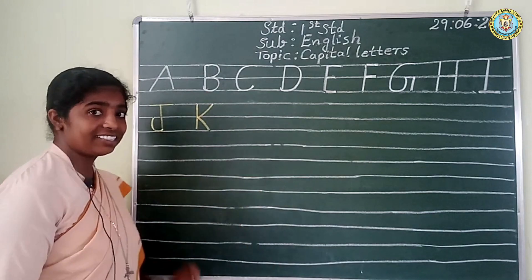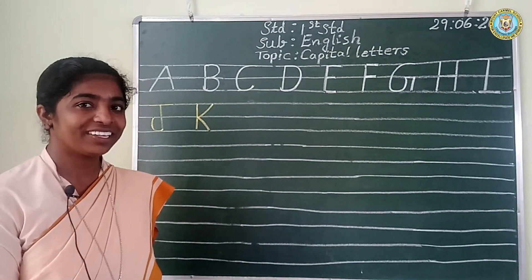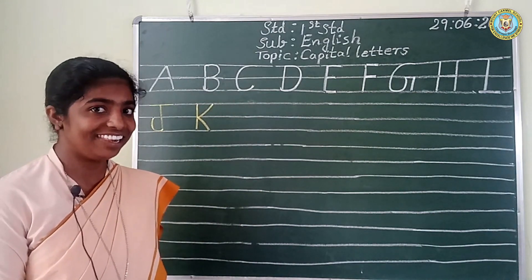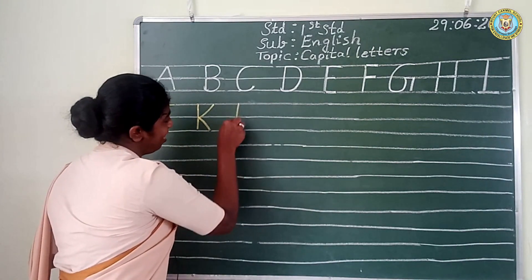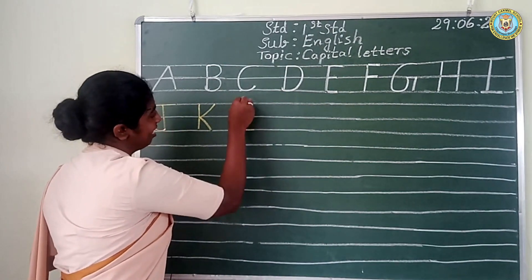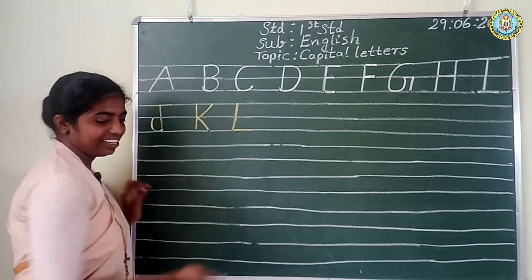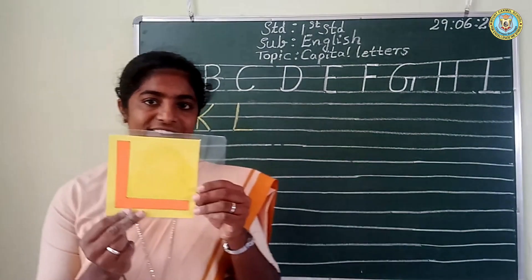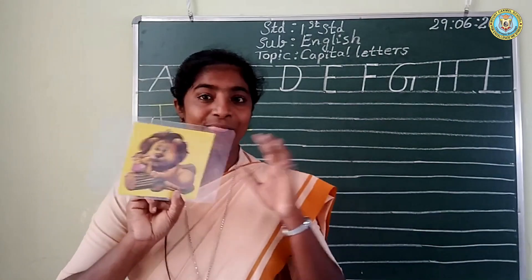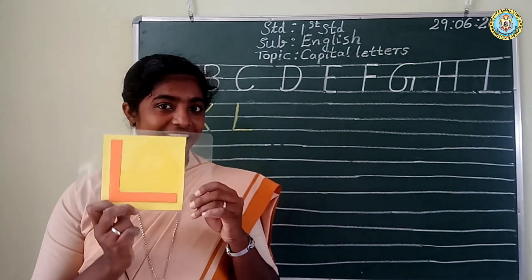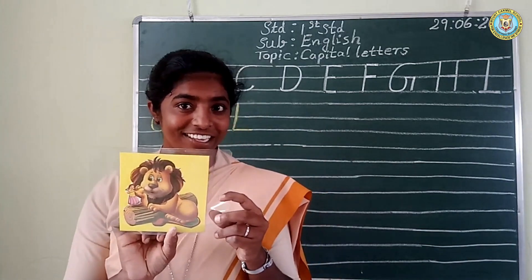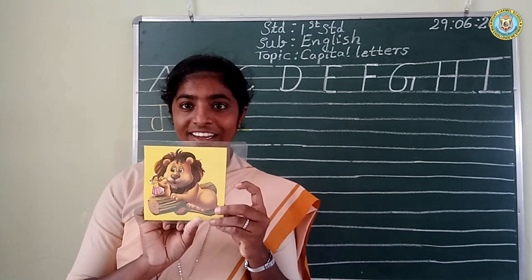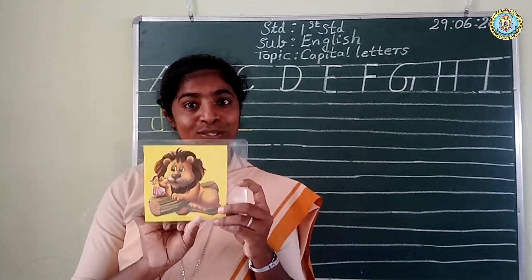Which is the next letter, children? Yes, it is L. L. L for lion. L for lion. Have you all seen a lion? Yes, we have all seen lions in the forest and in the zoo.